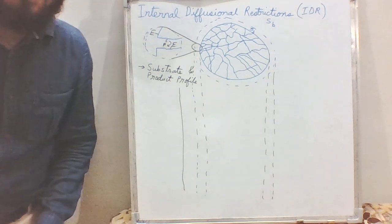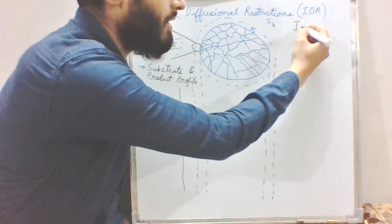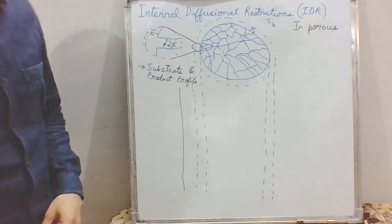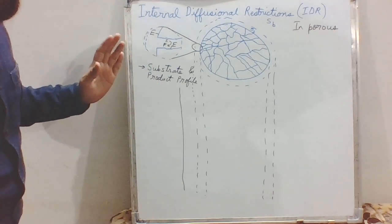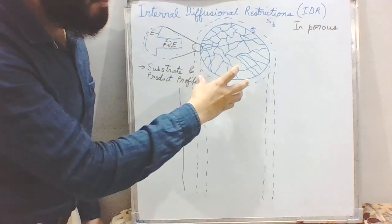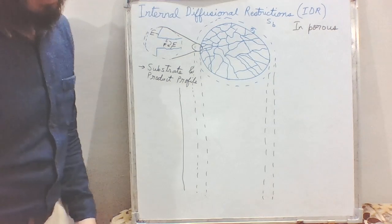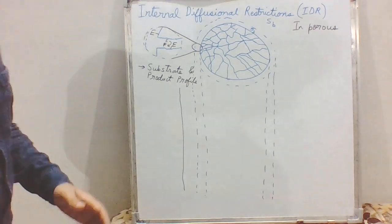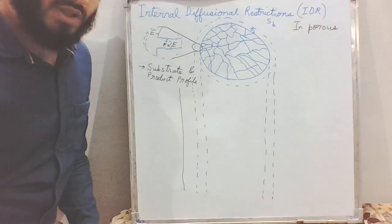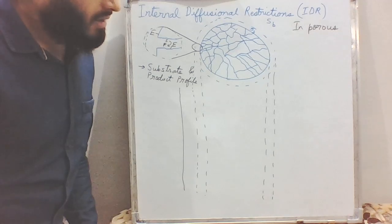Hello and welcome back. Today we will be studying about internal diffusion restrictions in porous immobilized enzyme particles. Internal diffusion restrictions come into play when we use a porous support to immobilize our enzyme. Earlier we have seen the effect of external diffusion restriction, which was due to the stagnant thin film surrounding the immobilized enzyme particle. We saw that internal diffusion restriction has certain effects over the kinetics of the enzyme — it was either kinetically limited or diffusion limited — for impervious non-porous supports. In case of porous supports, the situation becomes much more complex.